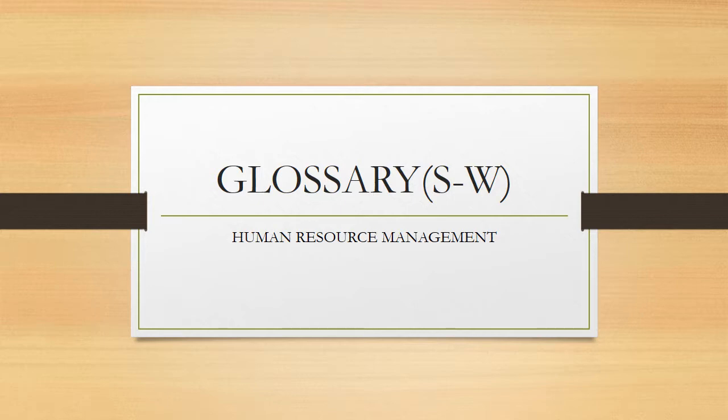Strategic Human Resource Management: formulating and executing human resource policies and practices that produce the employee competency and behavior a company needs to achieve its strategic aims. Strategic Management: the process of identifying and executing the organization's strategic plan and matching the company's capabilities with the demands of its environment. Strategic Plan: the company's plan for how it will match its internal strengths and weaknesses with external opportunities and threats in order to maintain a competitive advantage.